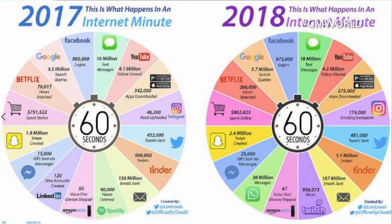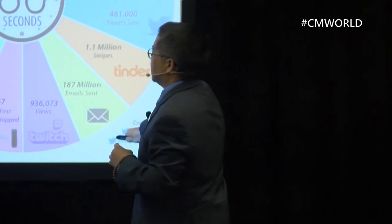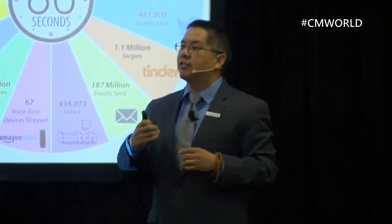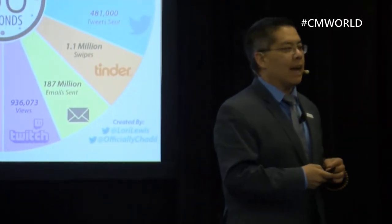That is a lot of Netflix and chill. We have 16 million text messages last year, 18 million this year; 990,000 swipes on Tinder last year, 1.1 million per 60 seconds this year — I'm guessing mostly left. That is a tremendous amount of data in all these different formats, and it's not just spreadsheets — it's a whole variety of content.